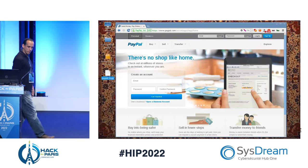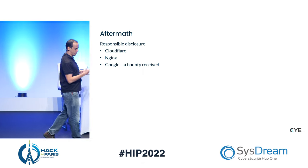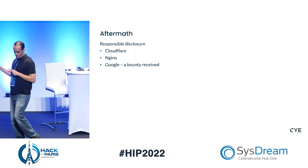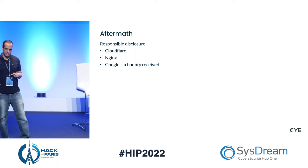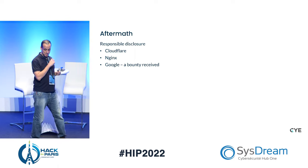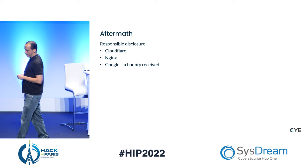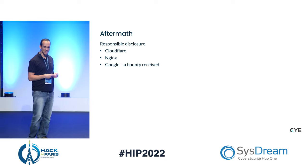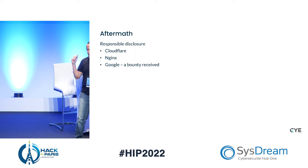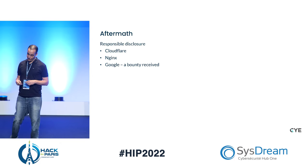The aftermath: we responsibly disclosed to Cloudflare, but they didn't consider this a vulnerability — it's just a rare case combining Chromium and CRLF injection, not their fault. Same goes for Nginx — they replied it's not a real vulnerability. Google issued a small bounty for disclosing this irregular behavior in Chromium and they fixed it. This no longer works in HTTP 2 either.